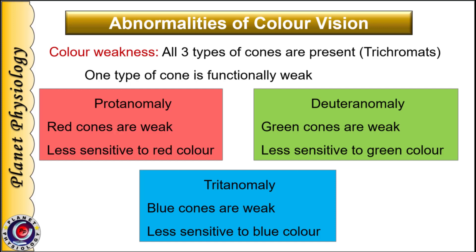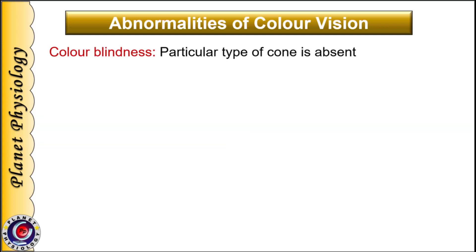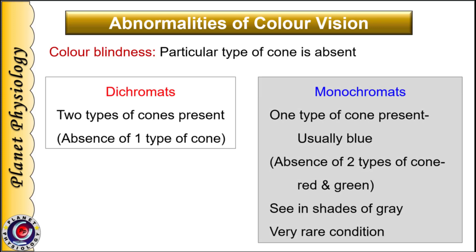When a particular type of cone is absent in the retina, it results in color blindness. Depending upon the number of cone types that are absent, color blindness is further subdivided into two: dichromates and monochromates. In dichromates, the person has only two types of cones, meaning one type is absent. In monochromates, only one type of cone is present — usually only blue cones — while red and green cones are absent. They see everything in shades of grey, and monochromatism is a very rare condition.